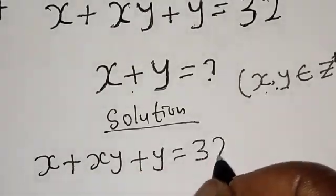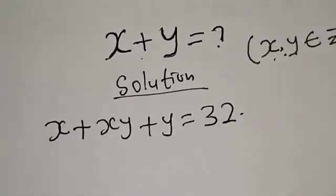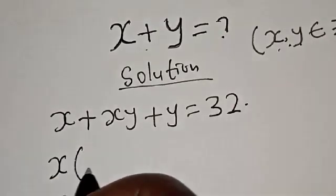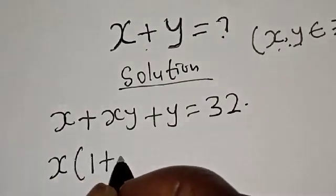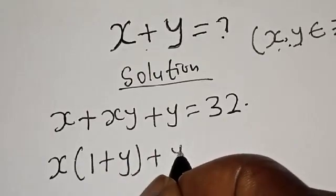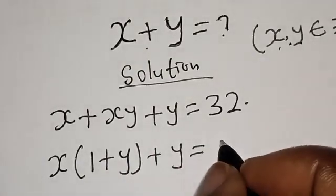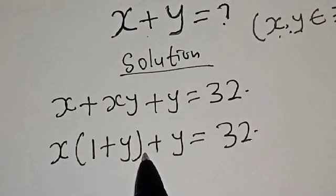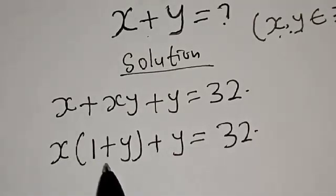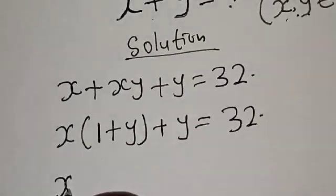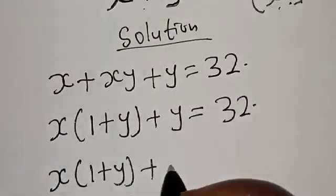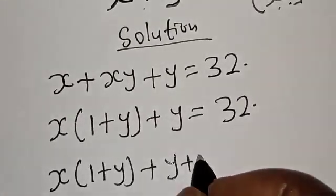We have the given equation x plus xy plus y equal to 32. Let's factor x out: we have x times (one plus y) plus y is equal to 32. Now here we have (one plus y) and here is y, and x is outside. Then we can add one to both sides: x times (one plus y) plus y plus one.